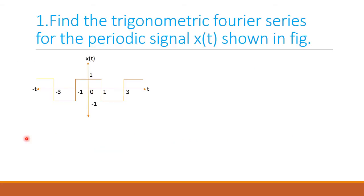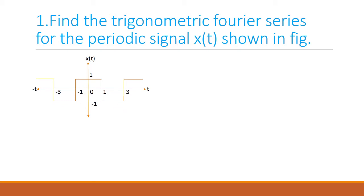Now let us solve a problem in trigonometric Fourier series. Find the trigonometric Fourier series for the periodic signal x(t) shown in the figure. From the figure itself, we can understand it is a periodic signal, so we can apply Fourier series to it.